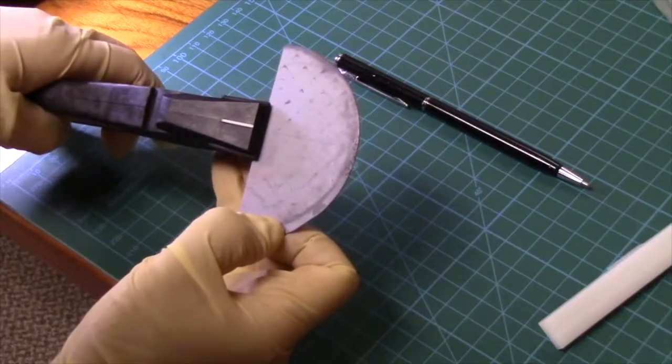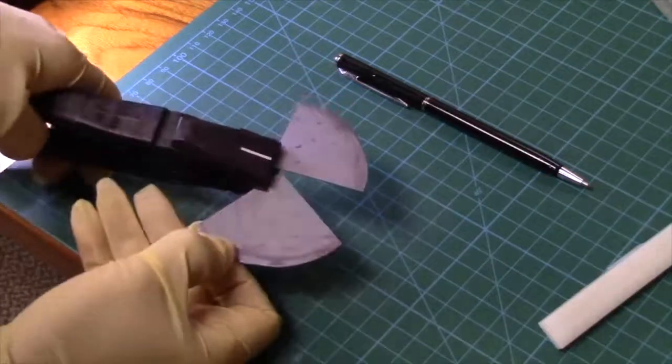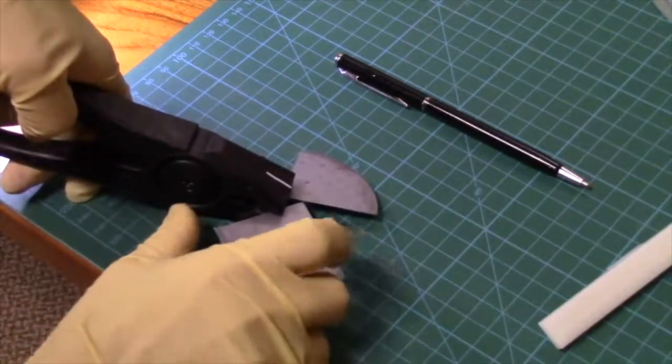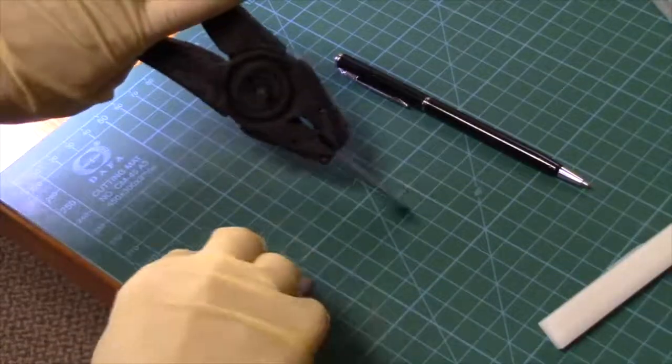With the first scribe made, use the Lattice Gear Precision Cleaving Pliers to cleave the wafer.